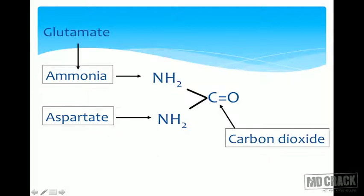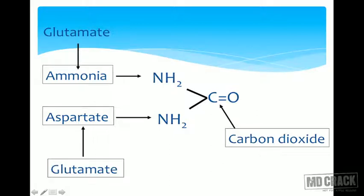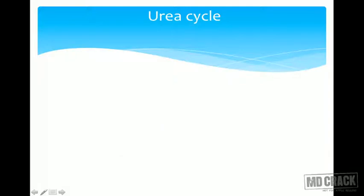Essentially, glutamate is the contributor of nitrogen in the urea molecule — either directly as ammonia or indirectly via aspartate. Glutamine, which acts as a transporter, has also helped in the formation of urea. Key points: urea is the end product of protein metabolism, produced in the liver; the cycle is partly mitochondrial and partly cytosolic.